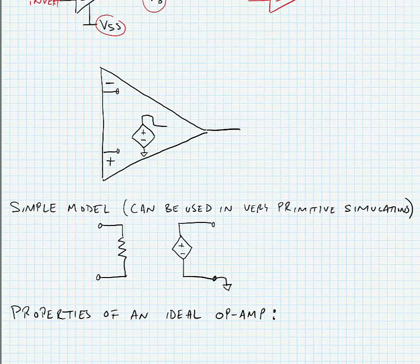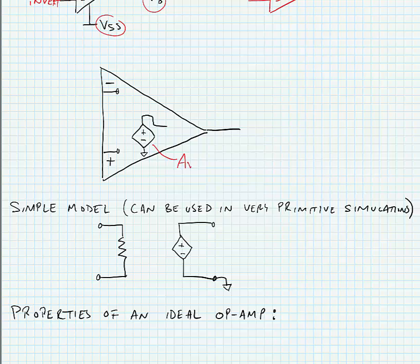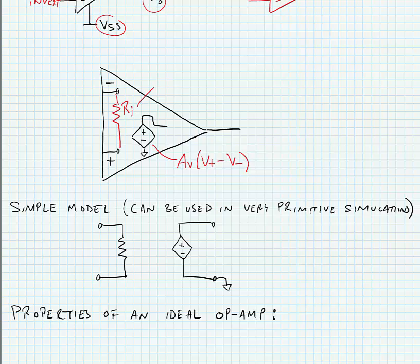Inside a real operational amplifier we have our voltage gain, A_V, times the difference between the two input terminals — the non-inverting and the inverting terminal. There might be some finite resistance between those terminals, R sub I, but we desire R sub I to be infinite. There also might be some finite output resistance in series with the voltage gain, and we desire that to go towards zero for an ideal amplifier.